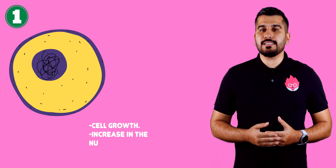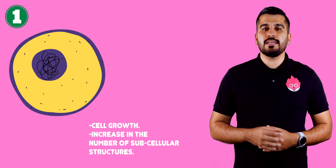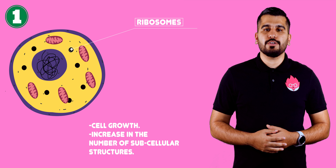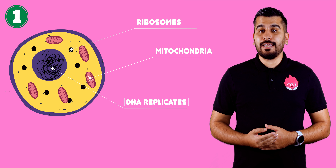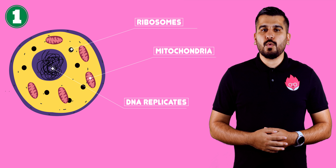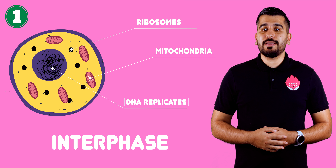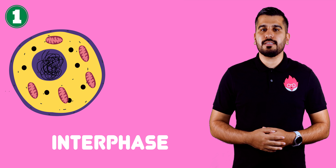In step one, the cell grows and increases the number of subcellular structures such as ribosomes and mitochondria. The DNA replicates. This is called interphase. The cell spends most of its life in this phase.